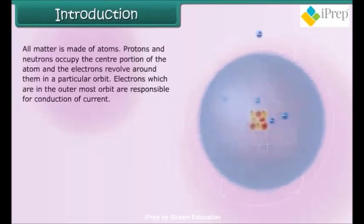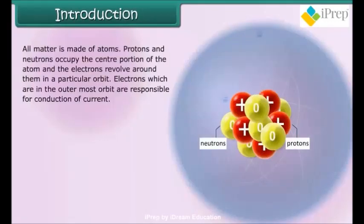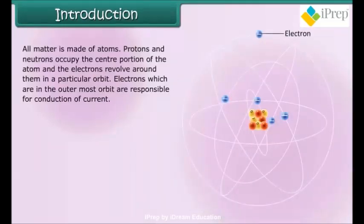Introduction: All matter is made of atoms. Protons and neutrons occupy the center portion of the atom, and the electrons revolve around them in a particular orbit. Electrons which are in the outermost orbit are responsible for conduction of current.